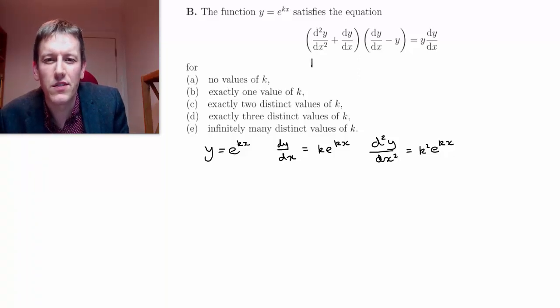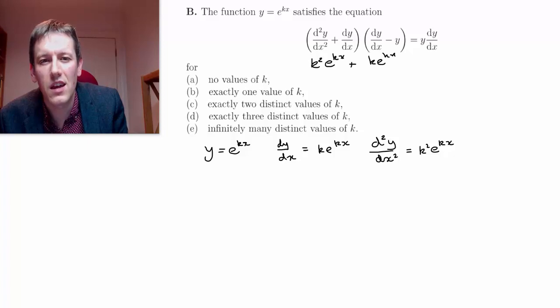You might not do this if you're actually doing the paper. But we've got k squared e to the kx for d2y by dx squared, plus dy by dx, which is k e to the kx.